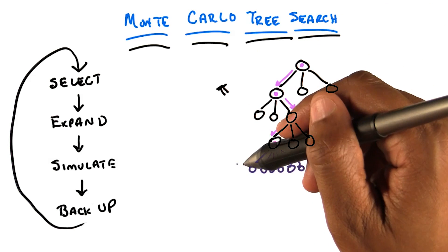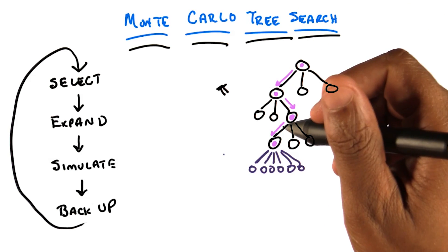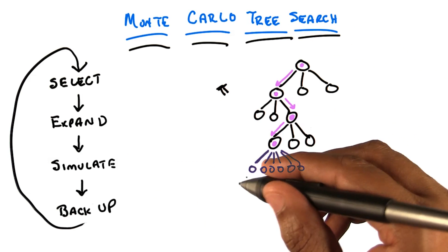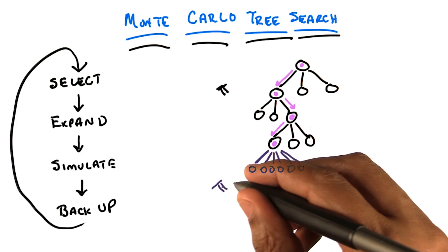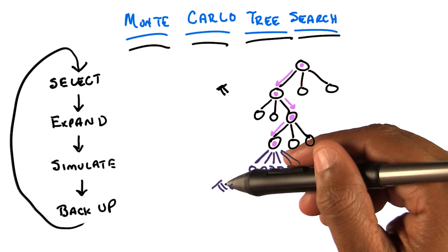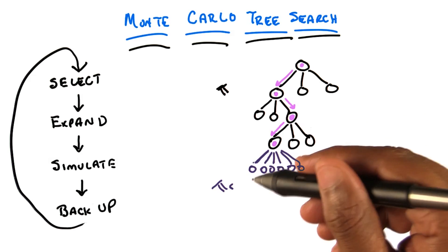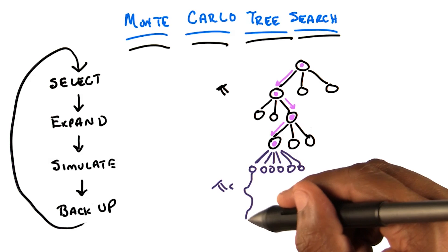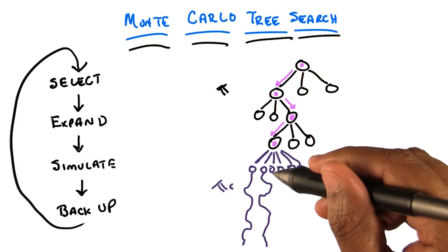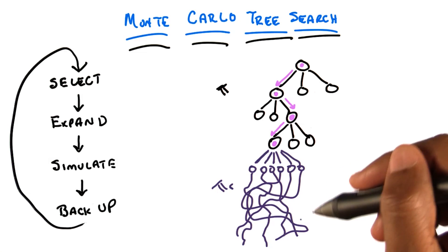Now, if we were doing the normal kind of tree search, like we talked about with game search, I would just use my evaluation function. But I don't have an evaluation function. So instead, I'm going to do simulation. And what that means is I'm going to follow some other policy — we call it the rollout policy. Just for the sake of discussion, let's say it's a random policy. So I took this particular action, I ended up in this particular state, and then I'm just going to behave randomly for a while. I'm going to do the same thing here, and here, and here, and I'm going to get a whole bunch of spaghetti.